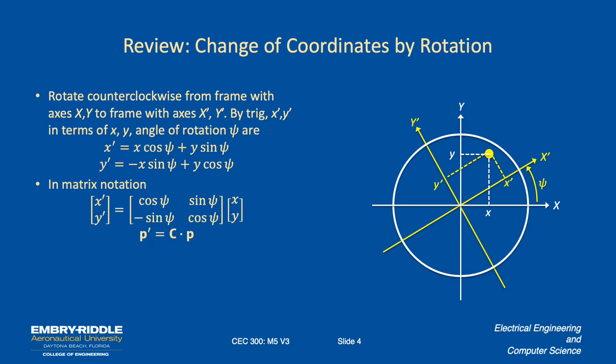We saw we could write this in a compact matrix notation, where we called that matrix there C. It's called a cosine matrix, or a directional matrix, or a rotational matrix. So the coordinates in the original reference frame, which are x and y, get operated on by the matrix C to form the new coordinates, p-prime.